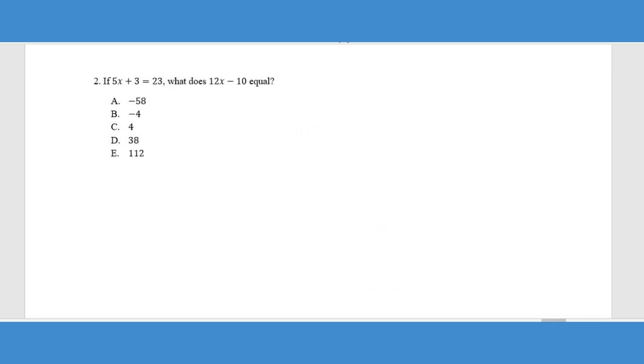So this next question is definitely a typical ACT kind of curveball question. They say five X plus three equals 23. And you look at that and you're like, Oh okay, that's easy. I'm just going to solve this. But then they say, what does 12 X minus 10 equal? So the whole intent here is to actually solve for X and then use it to figure out what that expression equals.